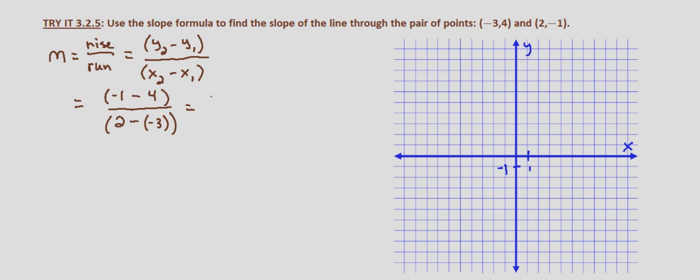And that equals negative 1 minus 4 is negative 5, and 2 minus negative 3—minus a negative is plus a positive—so that's negative 5 divided by 5, which equals negative 1.